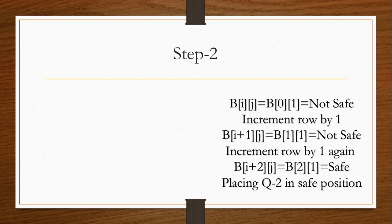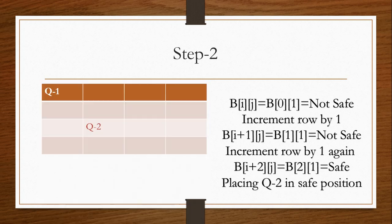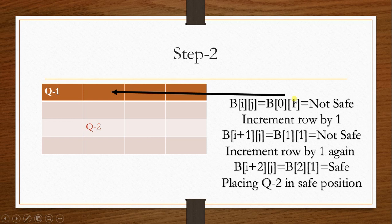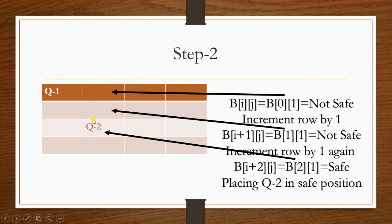Step 2: After placing queen number 1 at the starting location, the column is incremented and the remaining locations in the next column are checked for a safe position. The next column is column number 2. B[0][1] is unsafe since Q1 is beside it. B[1][1] is also unsafe. After incrementing again, a safe position is found and queen number 2 is placed there.